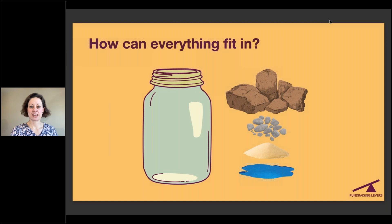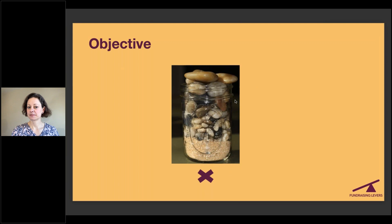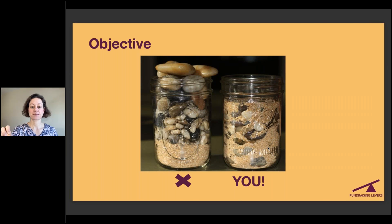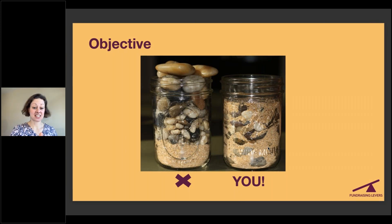What happens when you start with the sand is that your jar is going to overflow — things don't fit in. However, when you start with the rocks, your jar will look like the one on the right side. You put in the big rocks first, then you add the pebbles — the pebbles will find their way into the cracks between the big rocks. Then you add the sand, which finds its way into the little cracks. And at the very end, you pour in the water. You can try this at home — it works.